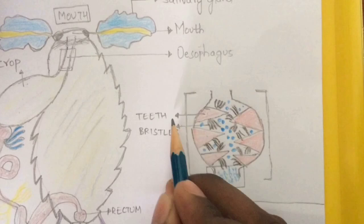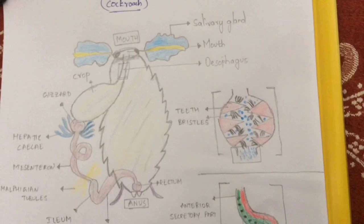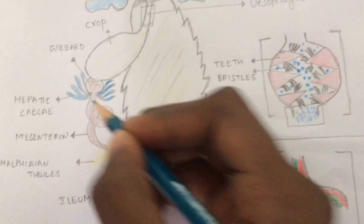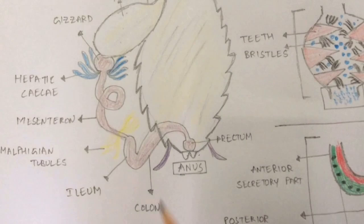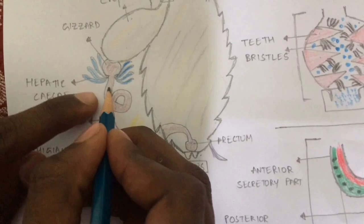The total food which is filtered by the bristles and ground by the teeth will come out from the gizzard and enter into the next part, that is the midgut. The midgut is commonly known as mesentron. It is a narrow tubular structure mainly present below the gizzard.